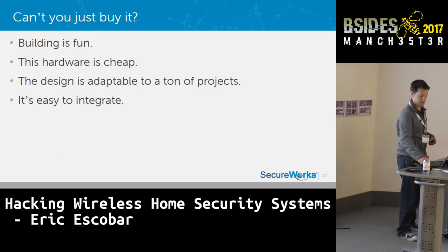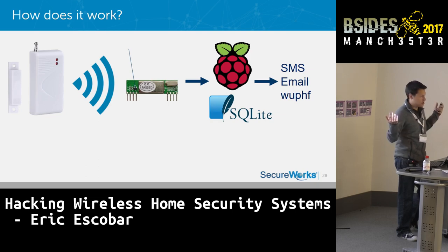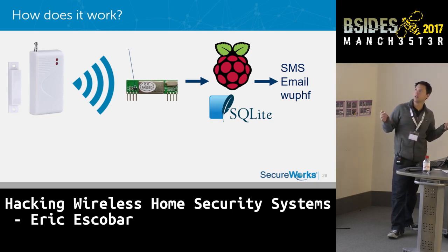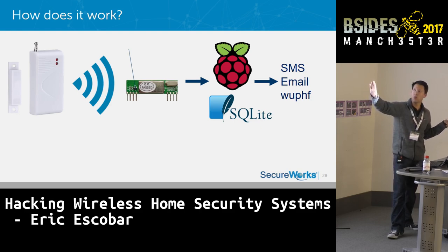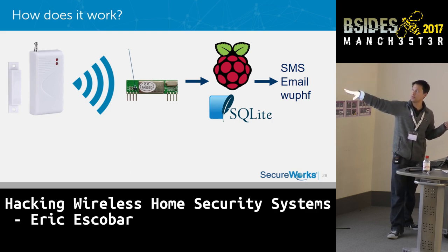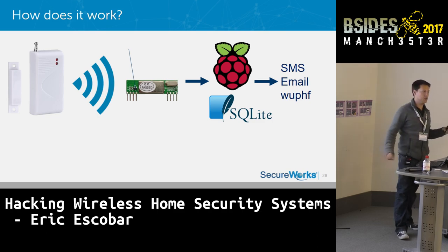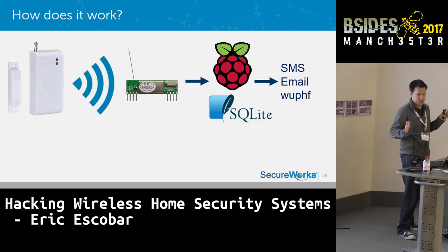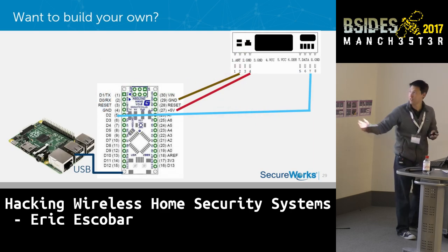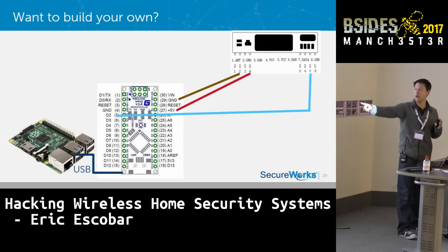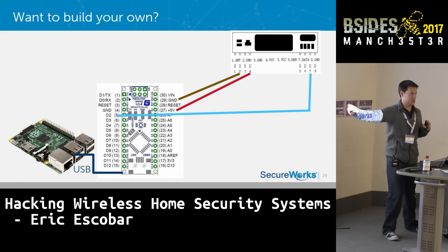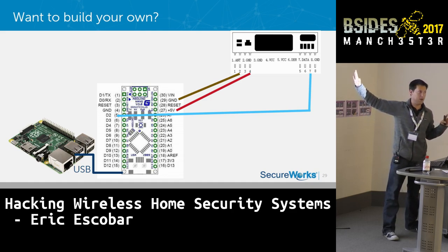In a nutshell, here's how it works: your door alarm signal goes off, you receive it, it goes to a Raspberry Pi, dumps into a lightweight SQLite database, and then you have it SMS or email you — totally programmable. If you're not a hardware person, there are literally four wires — one of which is USB. This is literally the wiring diagram of it.